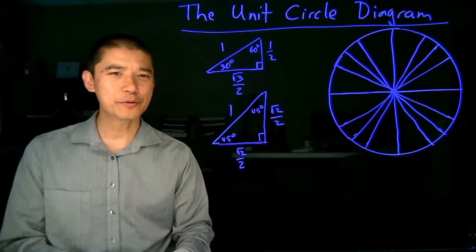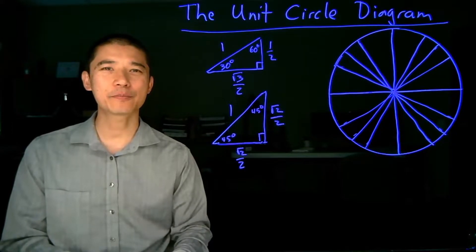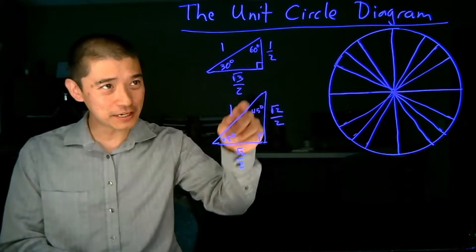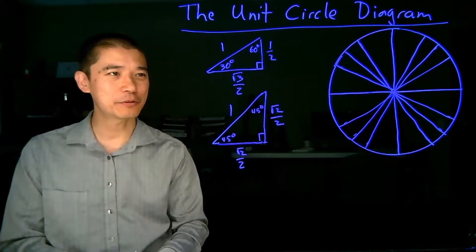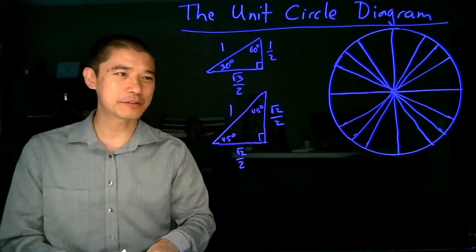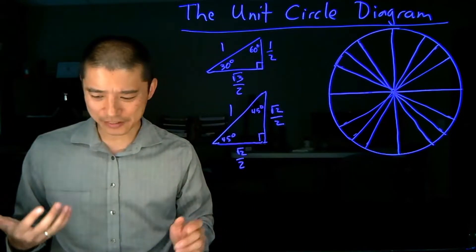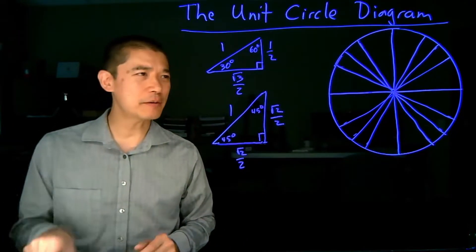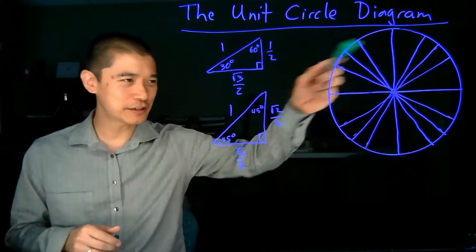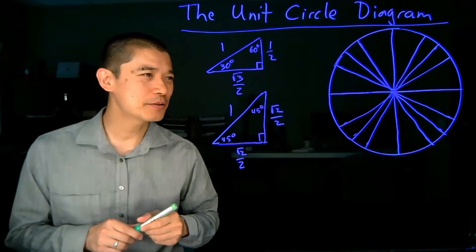We're now going to put these special right triangles together with the unit circle picture to actually find some coordinates on the unit circle itself. I've labeled the triangles here with the lengths, and I have physical manipulatives that fit over these pictures. The idea is that if we're given a particular angle, we should be able to determine the coordinates as long as they are these special angles on the unit circle. Let's do an example.